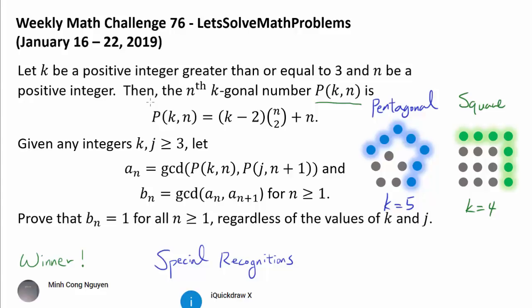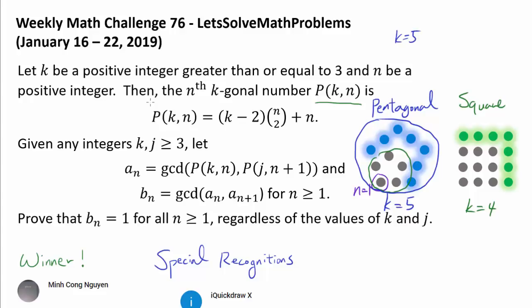What do pentagonal numbers, for example when k is 5, stand for? When n is 1, you're going to have 1 dot — in fact, when n is 1, every polygonal number is going to be 1. When n is 2, that's when you have this larger pentagon, so you're going to have 5. When n is 3, you count the dots: 6, 7, 8, 9, 10, 11, 12. So when k is 5 and n is 3, your number is going to be 12, and so on.